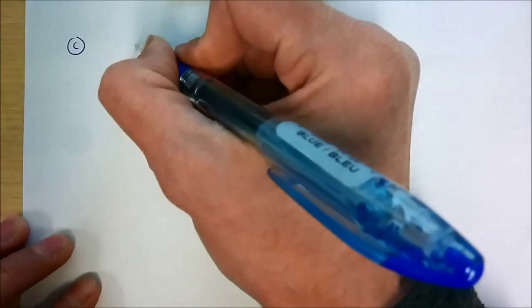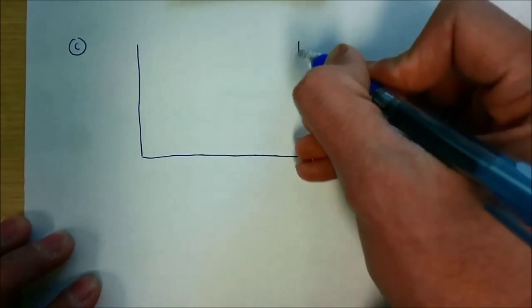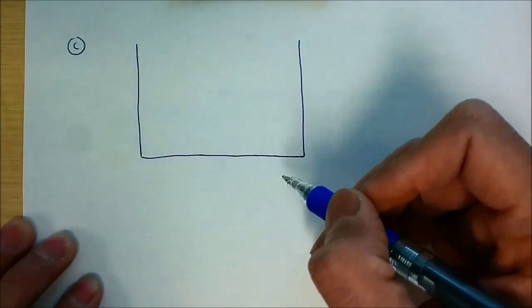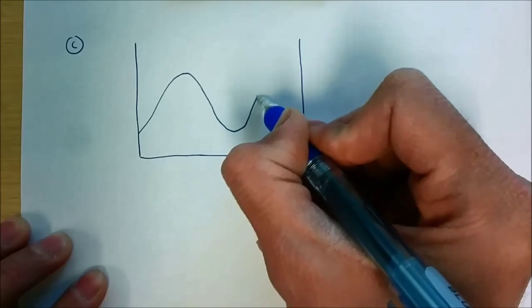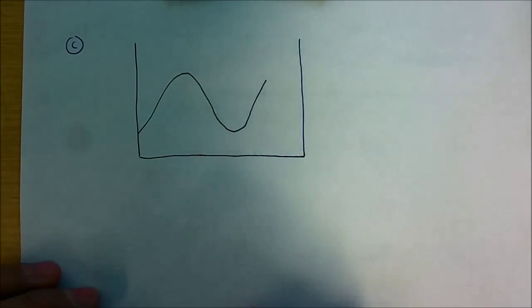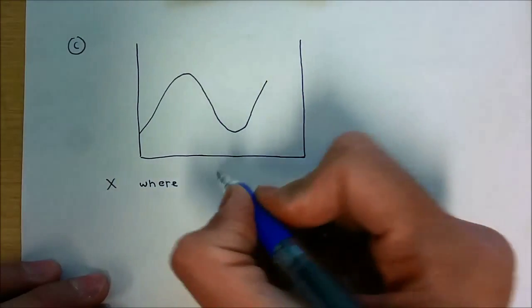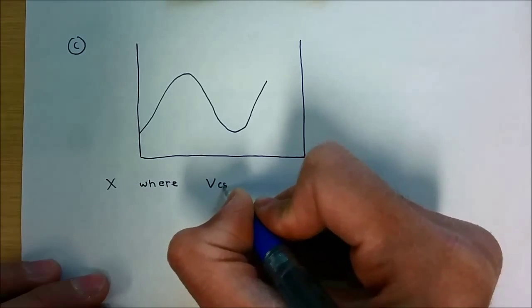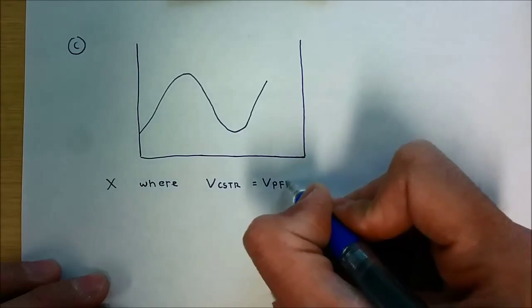The strategy is to use trial and error. However, before doing trial and error, we can predict where the conversion X will be such that the volume of the CSTR equals the volume of the PFR, by examining the plot.